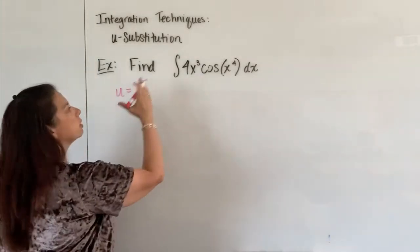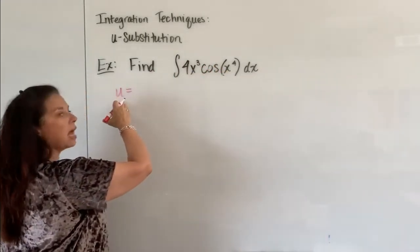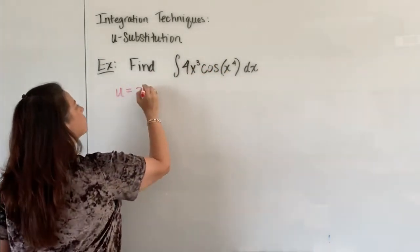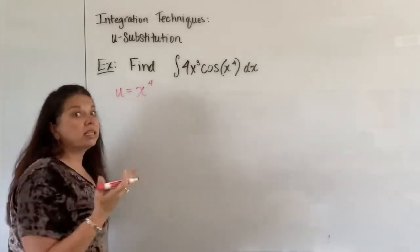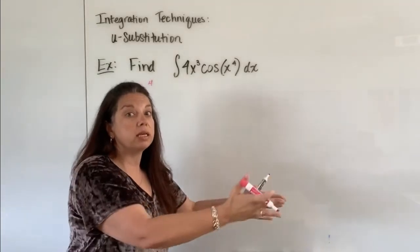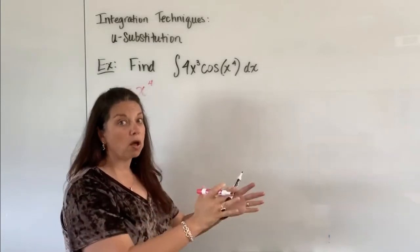Here, the inside function being x⁴, let's let that be our u. u equals x⁴. And often, like I mentioned, the inside function will be the u - not always 100%, but often it will.